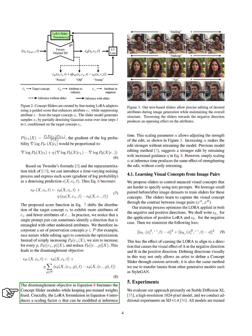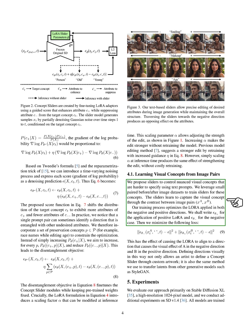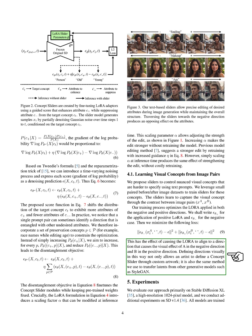The disentanglement objective fine-tunes the concept slider modules while keeping pre-trained weights fixed. Importantly, the LoRA formulation introduces a scaling factor that can be modified at inference time, allowing adjustment of the strength of the edit. Increasing this parameter makes the edit stronger without retraining the model. We propose sliders to control nuanced visual concepts that are harder to specify using text prompts, using small paired before-and-after image datasets to train sliders for these concepts. The sliders learn to capture the visual concept through the contrast between image pairs, and our training process optimizes the LoRA applied in both the negative and positive directions. Defining directions visually also allows us to transfer latents from other generative models such as StyleGAN.